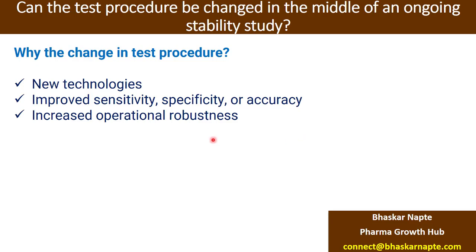Increased operational robustness is another reason — the test procedures in the lab must be robust enough in terms of analytical variations, and if the existing method is not robust, you can think about a change. Shortened testing times also matter; lab efficiency depends on the length of the test procedure. For example, if your HPLC runtime for related substances is 120 minutes, changing to UHPLC can shorten that to just 20 minutes.